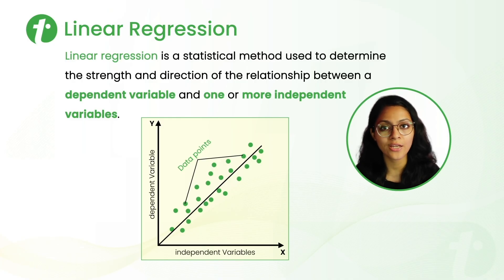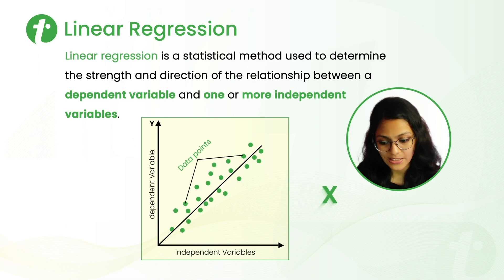That means the change in one variable is associated with the proportional change in another variable. Here, we have dependent variable Y and independent variable X and some data points are given. And the line passing through these data points is called line of regression.